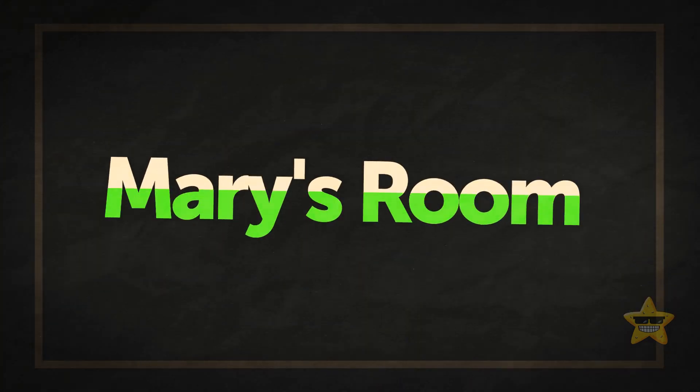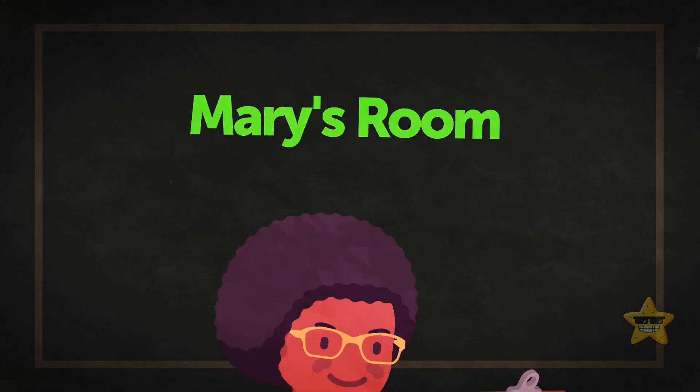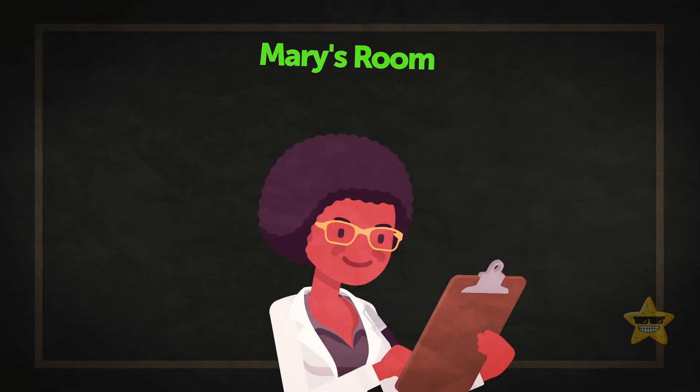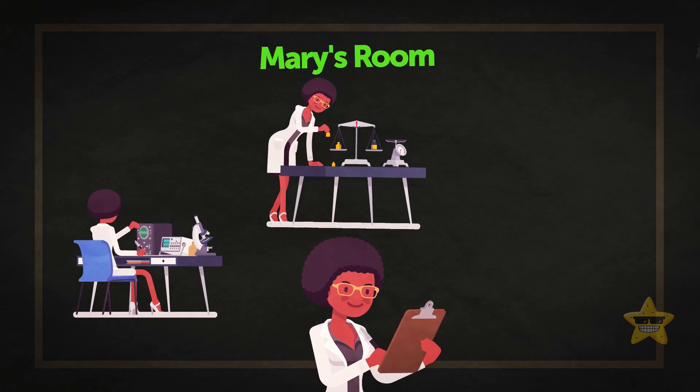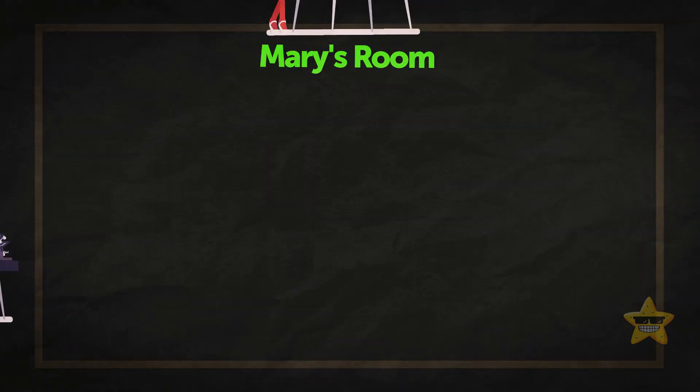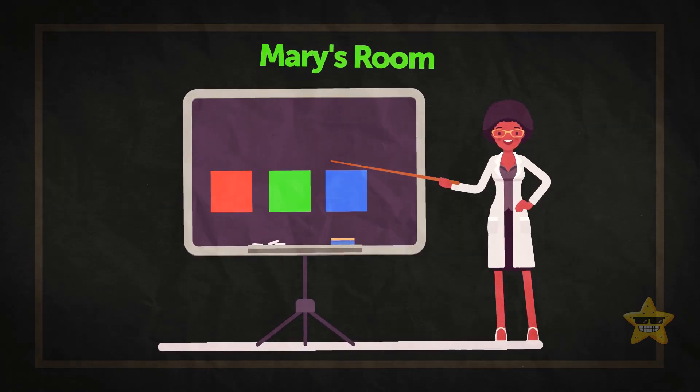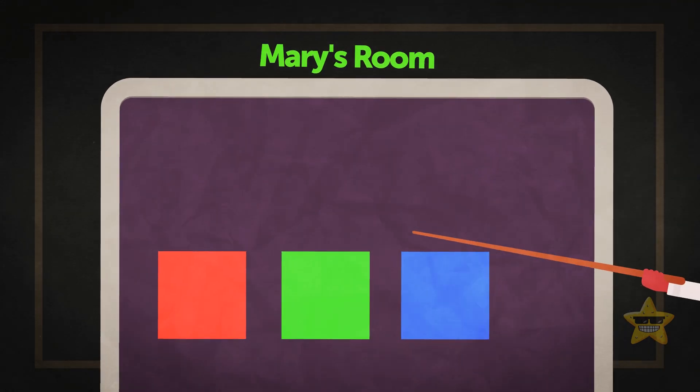So the first experiment is called Mary's Room. Imagine a woman named Mary. She's a professor of biology, medicine, and physics. All her life she's been studying color and its perception. She knows how we see colors.